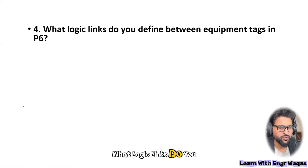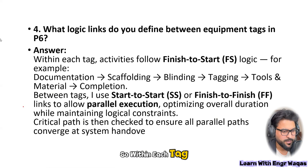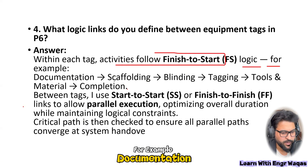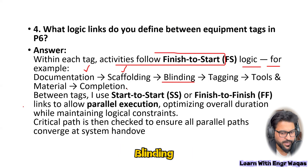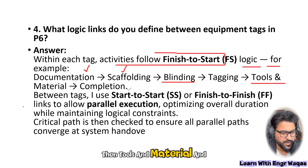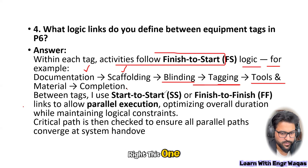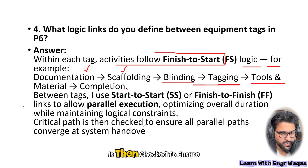What logic links do you define between equipment tags in Primavera P6? Within each tag, activities follow a finish-to-start relationship — for example, once documentation is done, scaffolding starts; once scaffolding is done, blinding begins; then tagging, then tools and material. Between tags I use start-to-start or finish-to-finish links to allow parallel execution, optimizing overall duration while maintaining logical constraints. Critical path is then checked to ensure all parallel paths are accounted for.